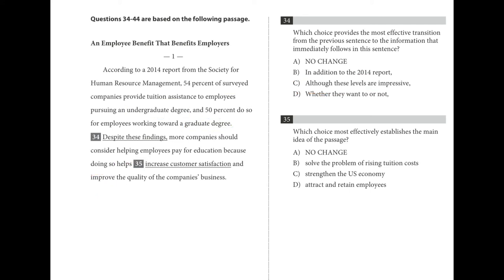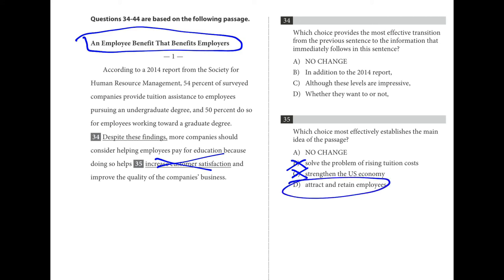For number thirty-five, if we go back to the title, we're looking for benefits that help the employers. B and C don't really work — those are about rising tuition costs in the economy. It's either A or D. While A would indirectly benefit employers, that's not what we're talking about. Attracting and retaining employees would more directly benefit the employers — that's the main idea. D is the best choice.